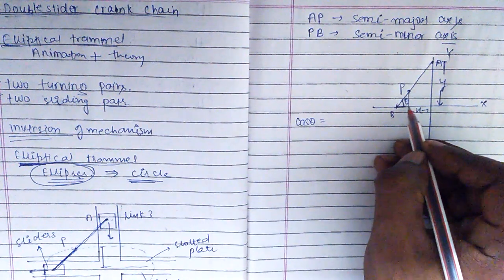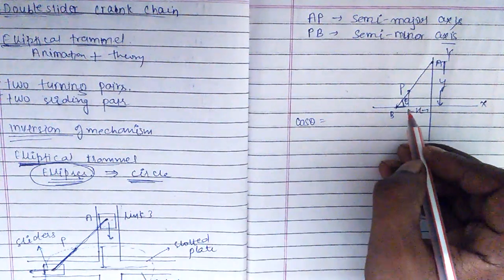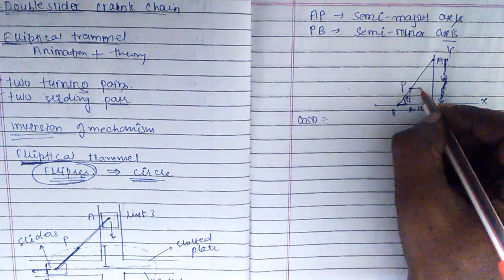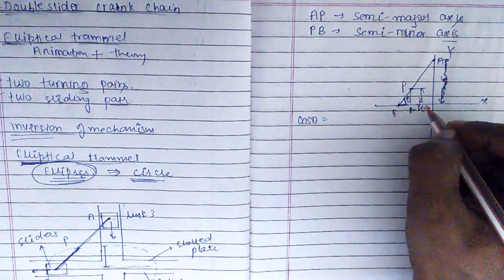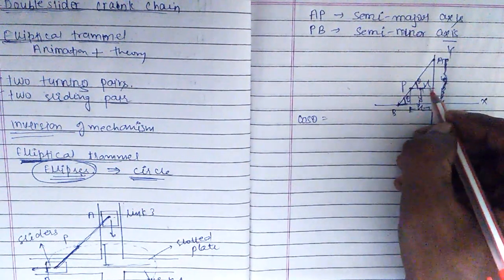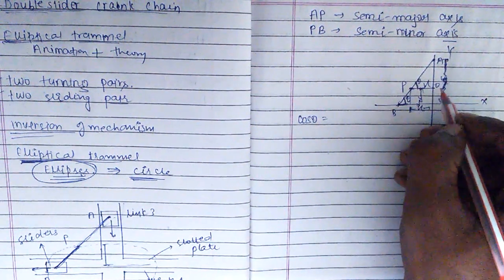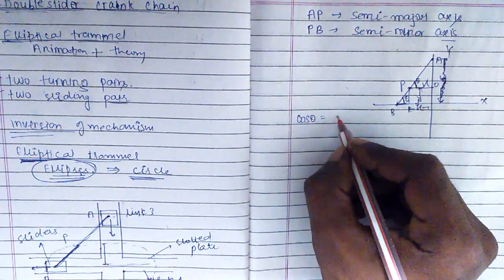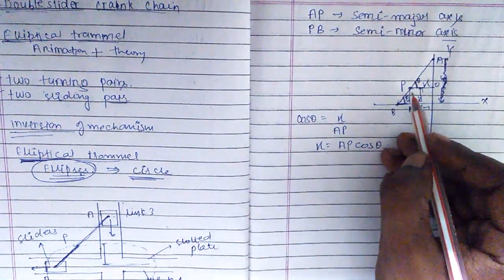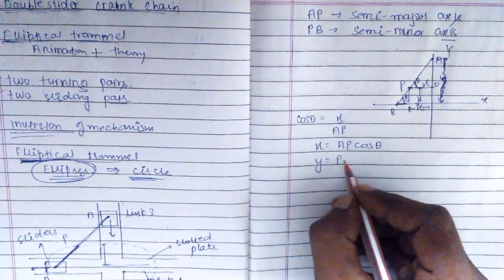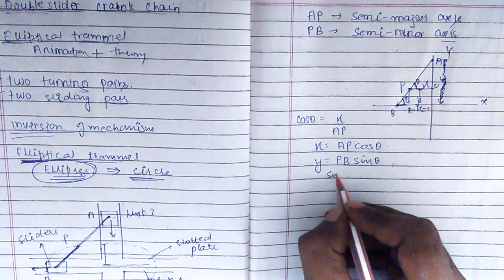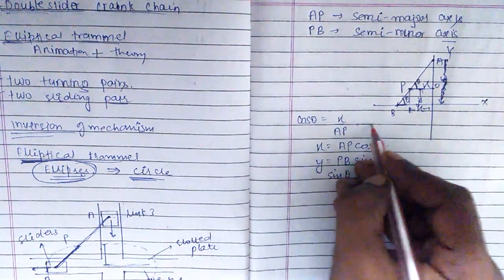We consider cos theta. This angle is also theta, and the base is x. So cos theta equals base upon hypotenuse, which gives x upon AP, therefore x equals AP·cos theta. For y, sin theta equals y upon PB, so y equals PB·sin theta.